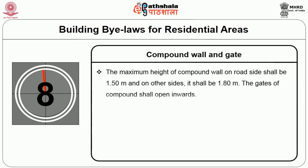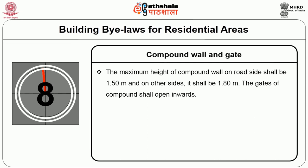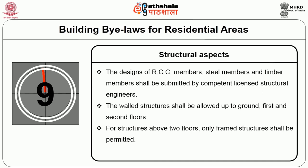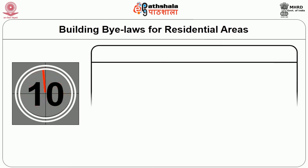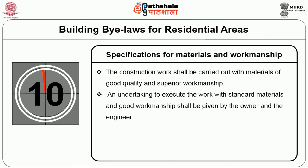Compound wall and gate: the maximum height of compound wall on the road side shall be 1.5 m and on other sides 1.8 m. The gates of compounds shall open inwards. Structural aspects: the design of RCC members, steel members, and timber members shall be submitted by competent licensed structural engineers. Walled structure shall be allowed up to ground, first, and second floors; for structures above two floors, only frame structure shall be permitted. Construction work shall be carried out with materials of good quality and superior workmanship, and an undertaking to execute with standard materials shall be given by the owner and the engineer.